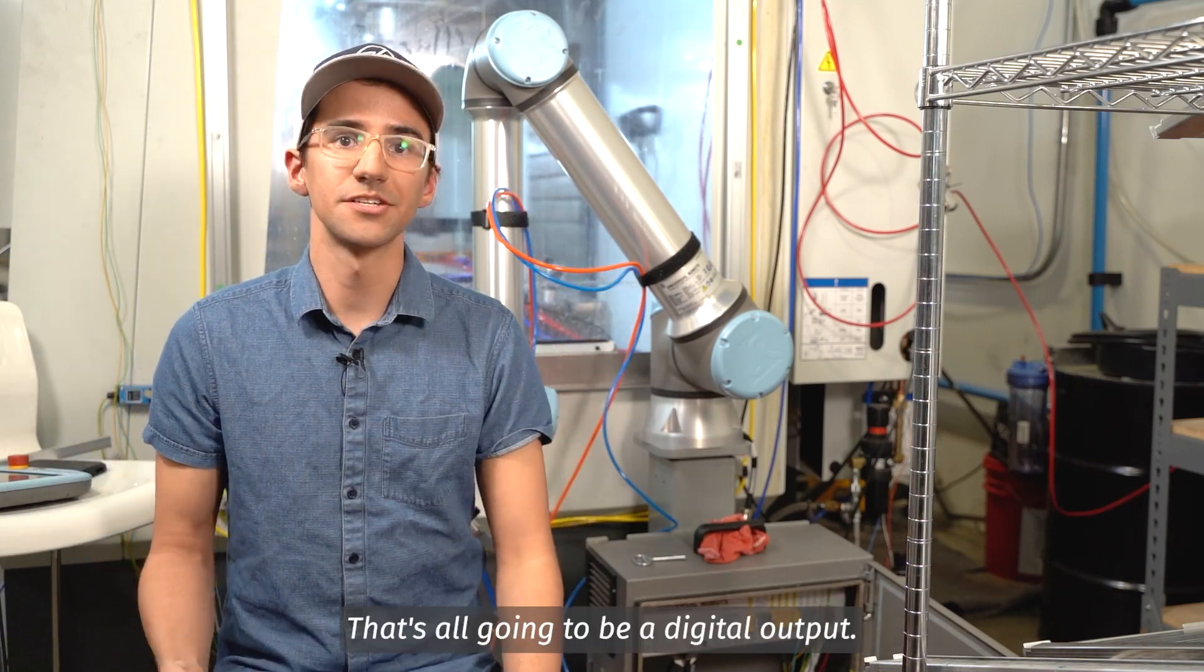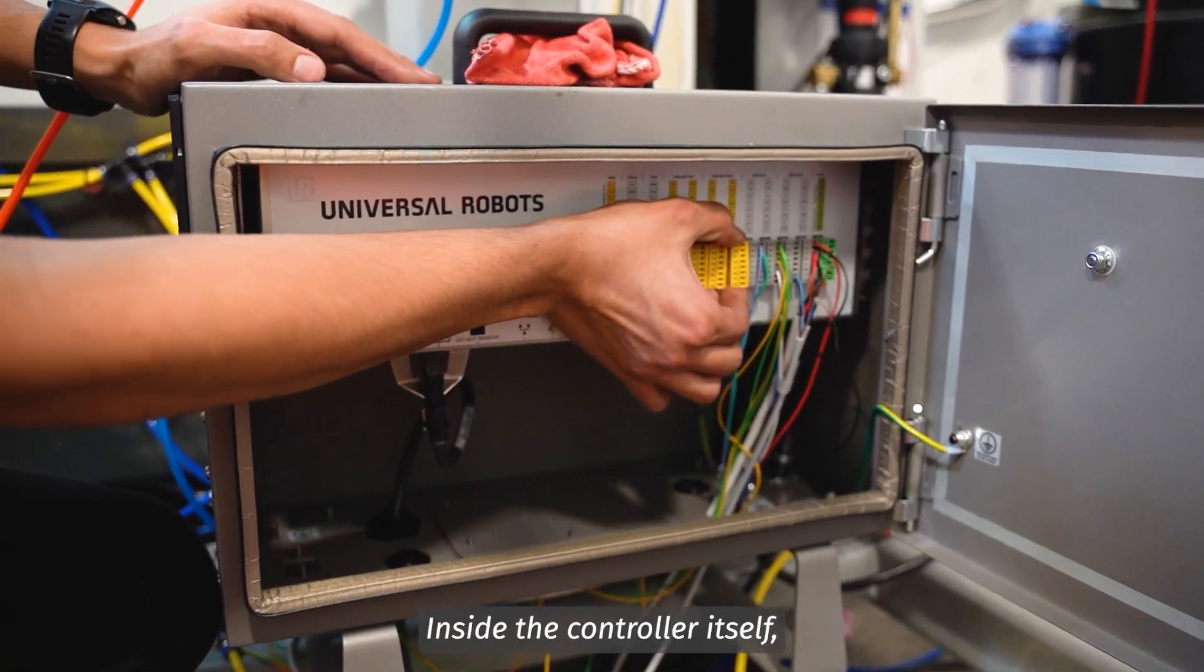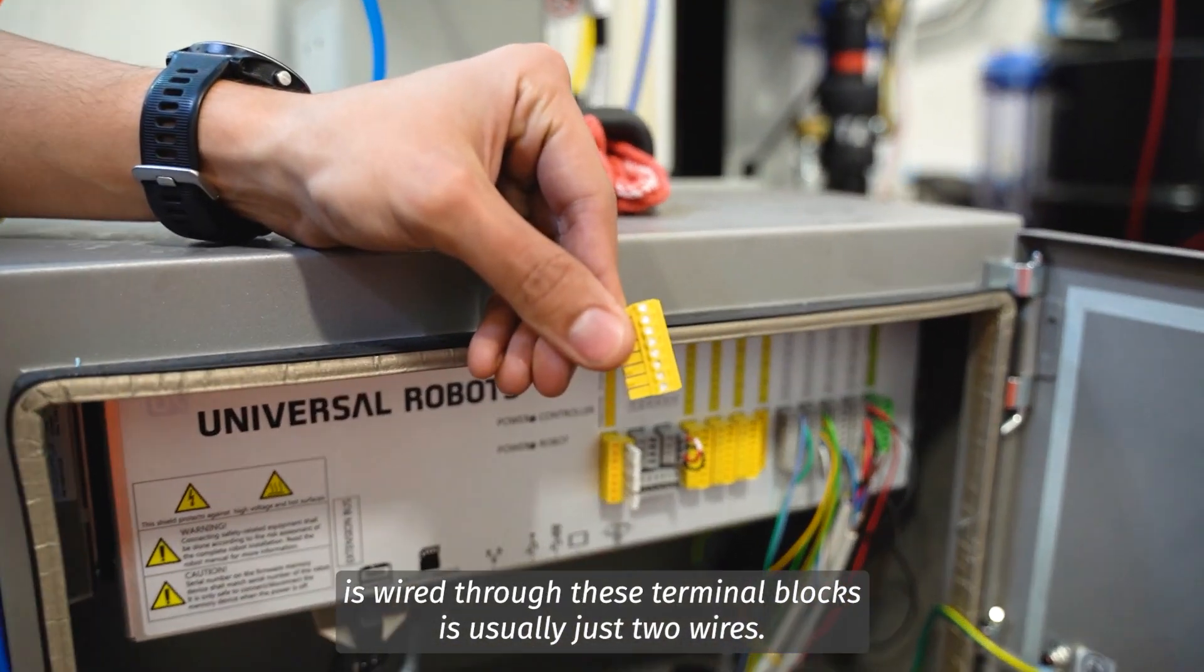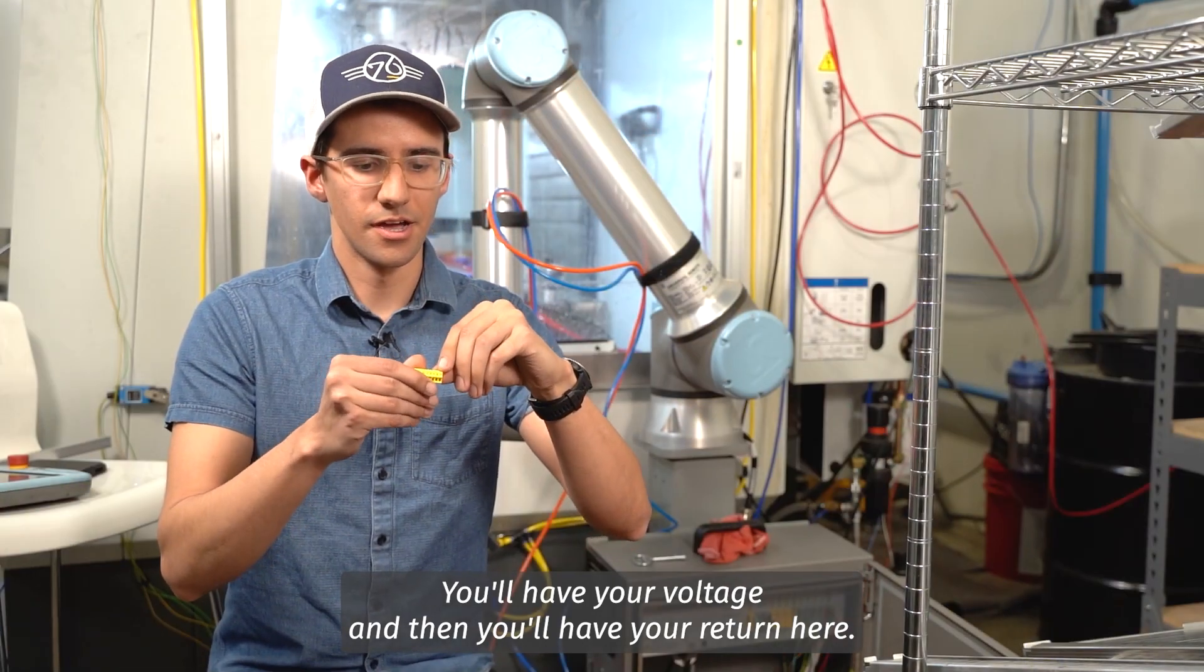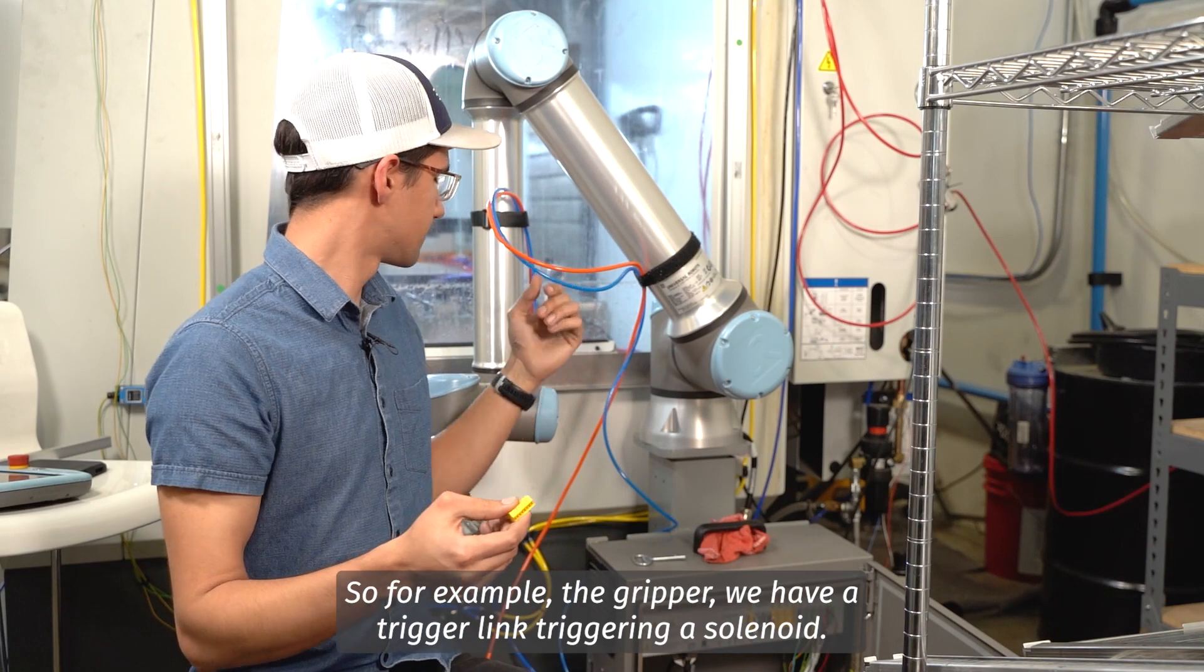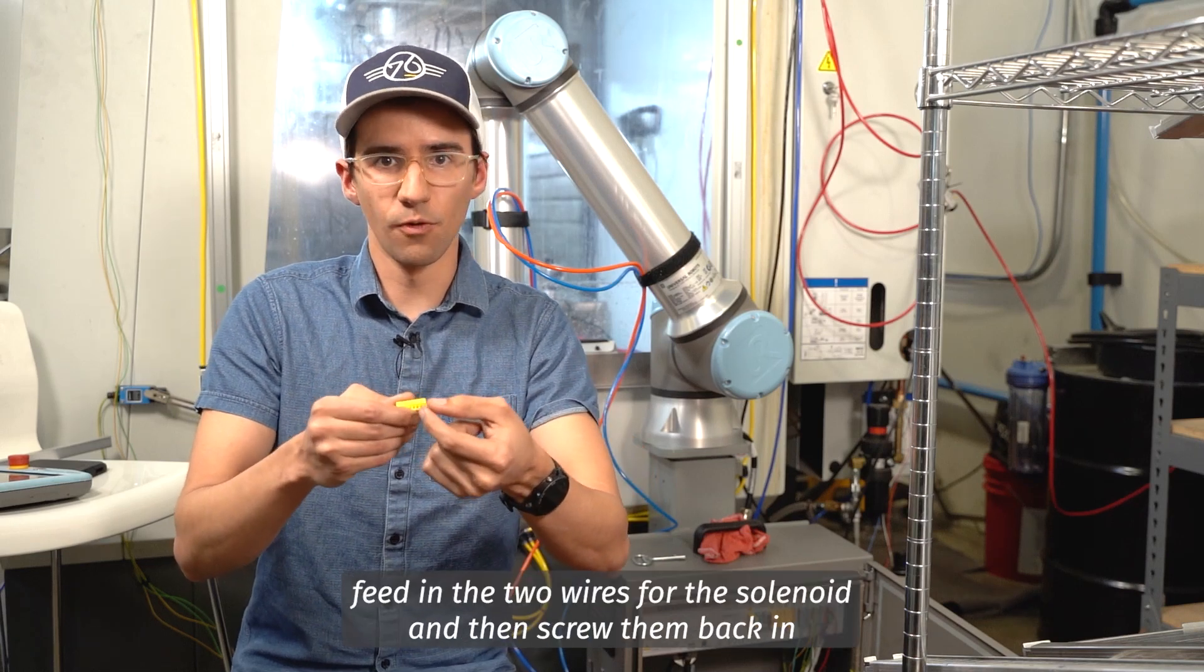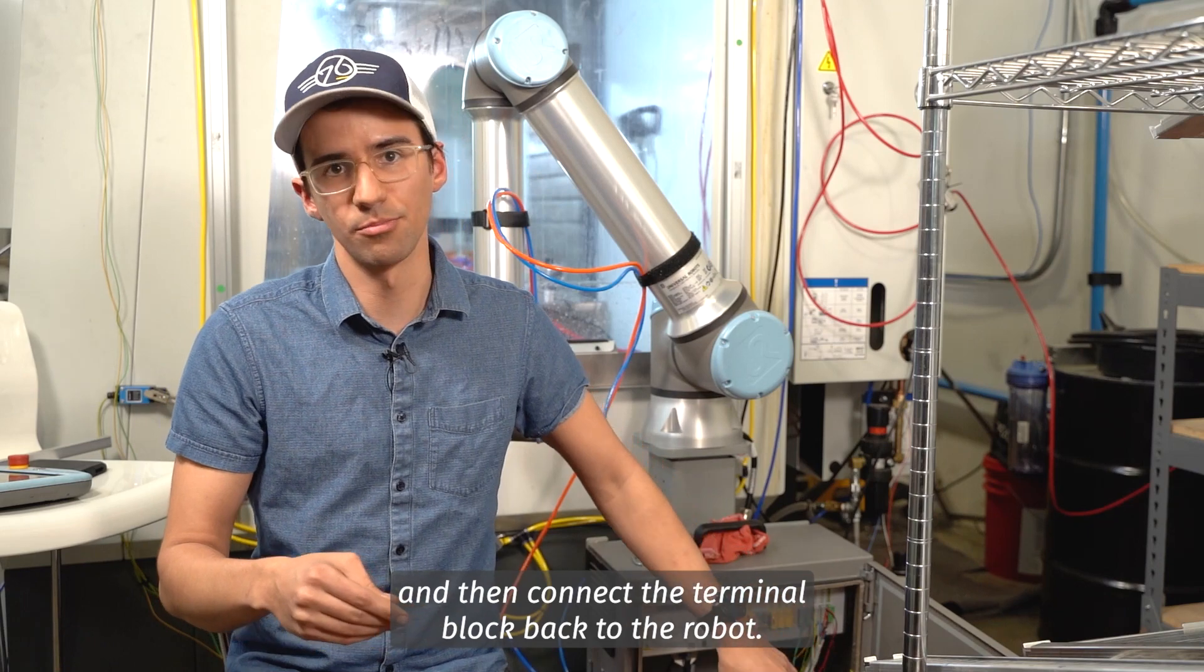Inside the controller itself, we have these terminal blocks, so everything that's wired is wired through these terminal blocks. It's usually just two wires. You'll have your voltage and then you'll have your return here. So for example, the gripper, we're triggering a solenoid. We'll unscrew these terminals, feed in the two wires for the solenoid, and then screw them back in, and then connect the terminal block back to the robot.